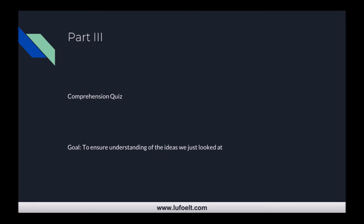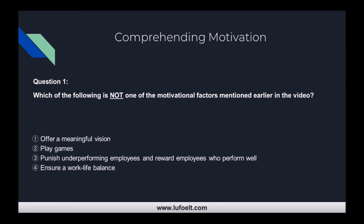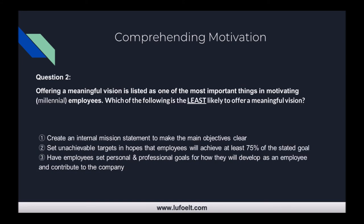Let's do a quick comprehension quiz. Question one: which of the following is NOT one of the motivational factors mentioned earlier? One — offering a meaningful vision; two — playing games; three — punish underperforming employees and reward employees who perform well; or four — ensure a work-life balance? The answer is number three — punishing underperforming employees was not one of the motivational factors mentioned.